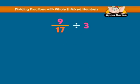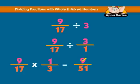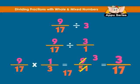Let's look at one more example. Nine over seventeen divided by three. This is nine over seventeen divided by three over one, which is nine over seventeen into one third, the reciprocal of three over one. We get nine over fifty-one. Reduce it and we have three over seventeen.